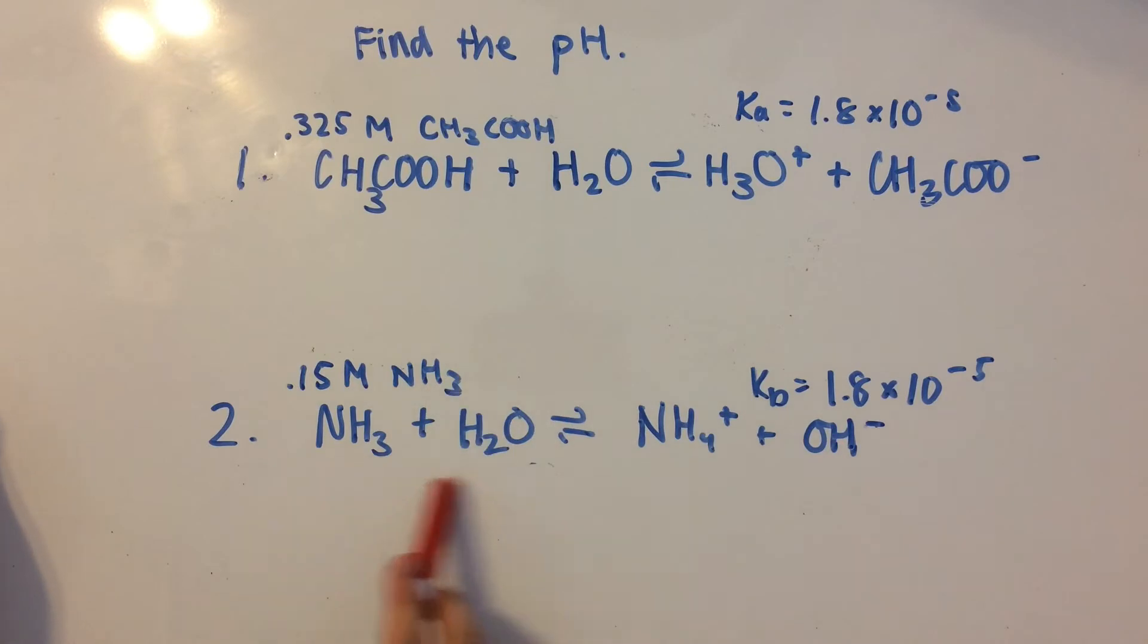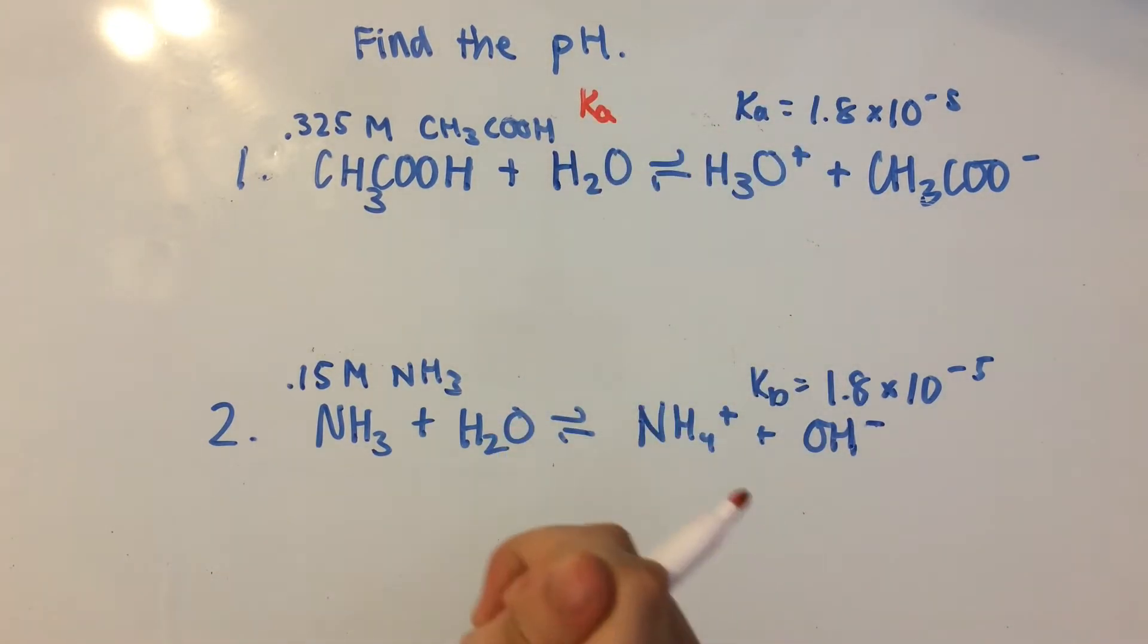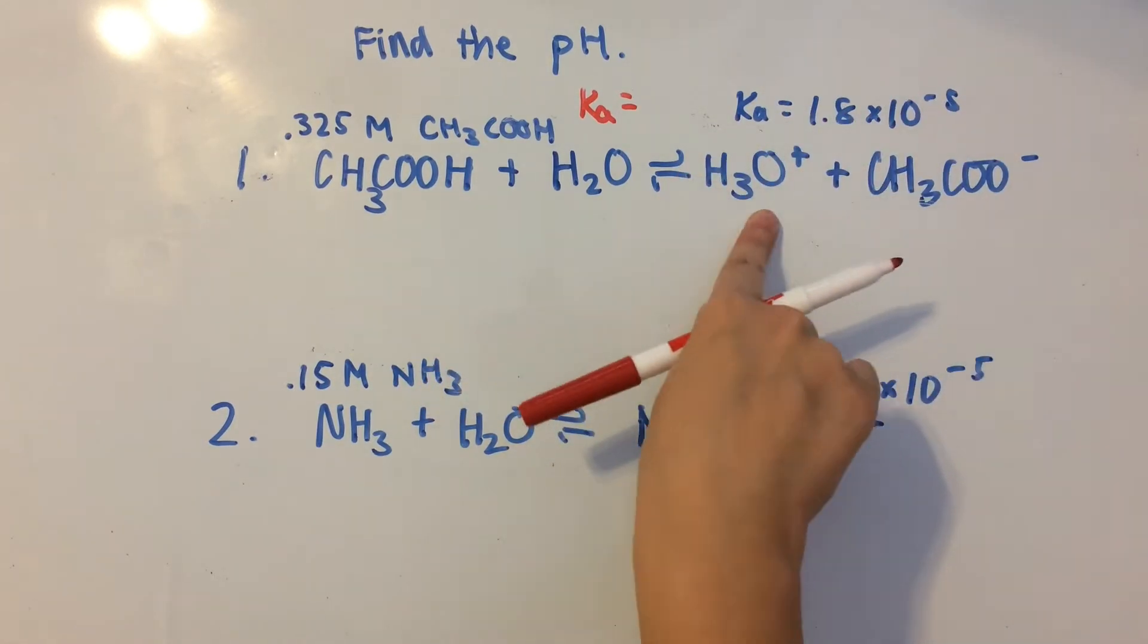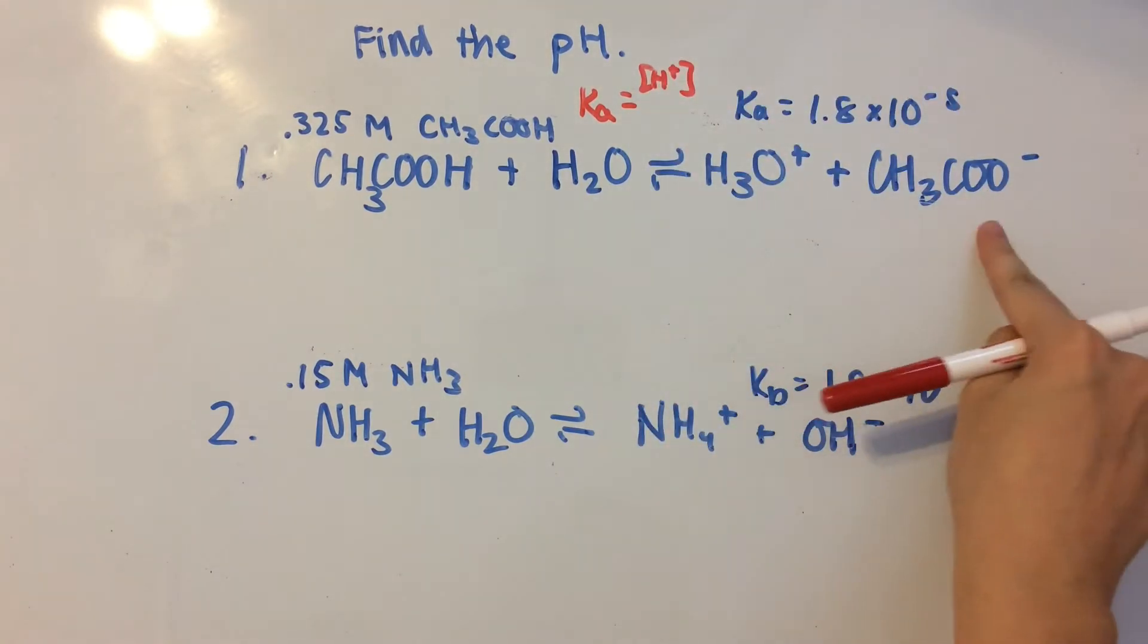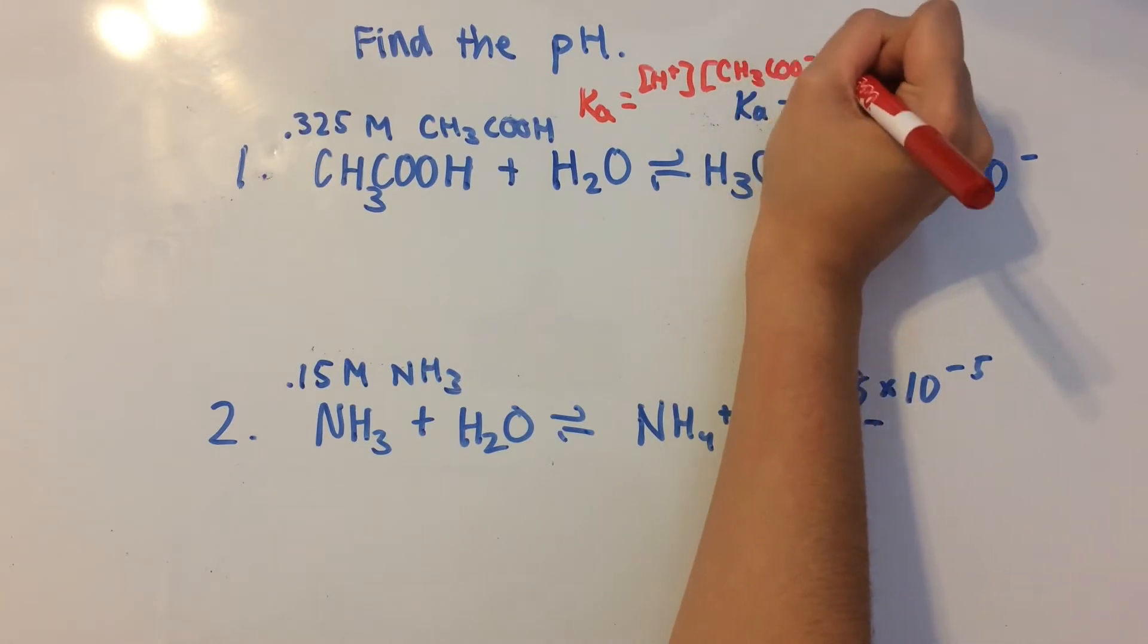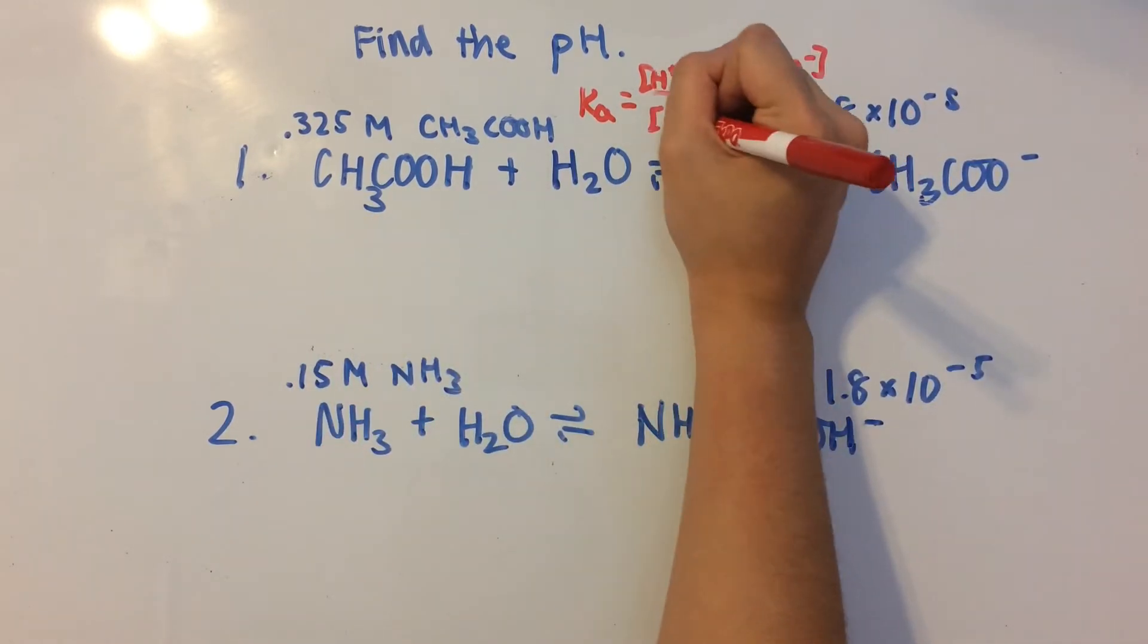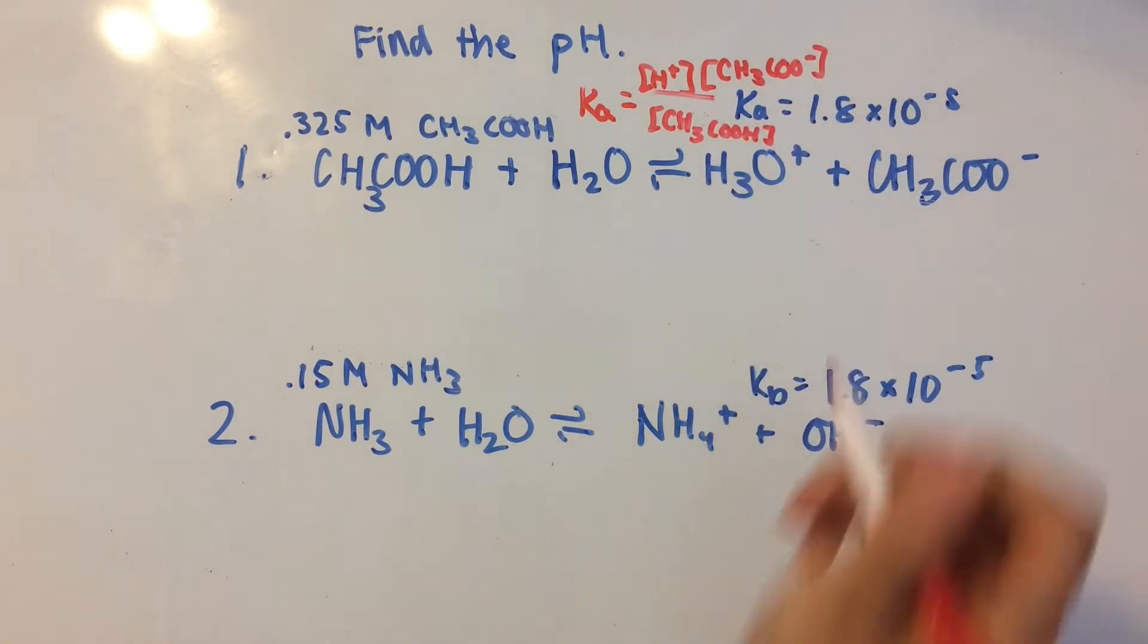So I've already gone and written down the equations for these. The first step is to write out the Ka equation, or Ka equilibrium expression. And remember that it's products over reactants. So H plus is one of the products, so concentration of H plus, and then we have concentration of the acetate ion over acetic acid.